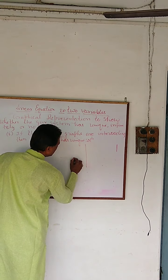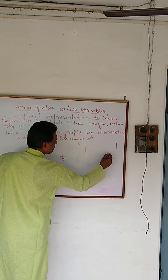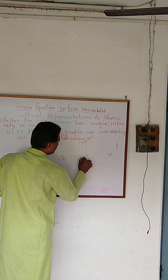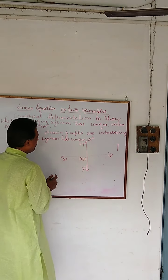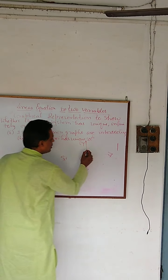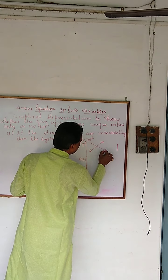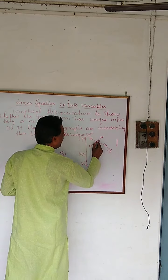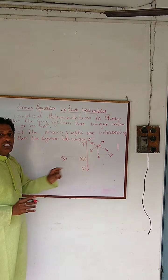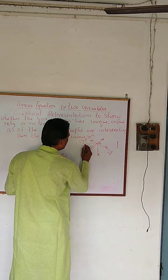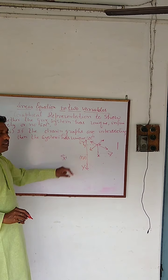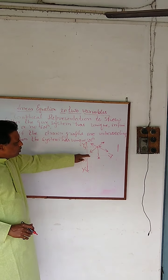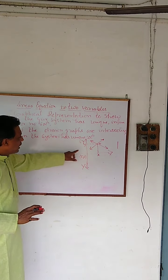So if you are finding intersecting lines — the two lines intersect at a point — then the given system has a unique solution. The graph will look like this: we have the x-axis, x-dash, y, and y-dash. Suppose the two lines intersect at point O. Through O, we draw a perpendicular to the x-axis. This point indicates x and this point indicates y. So the unique solution we are finding is x and y — that is the solution of the given equations.